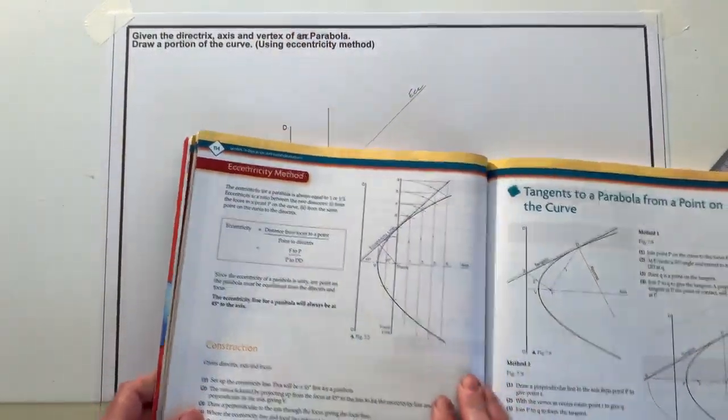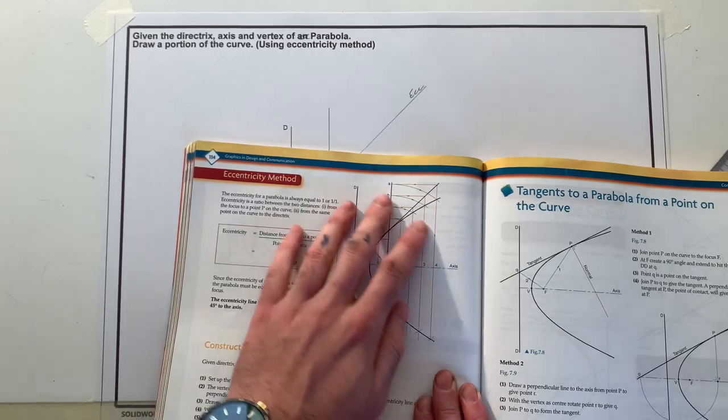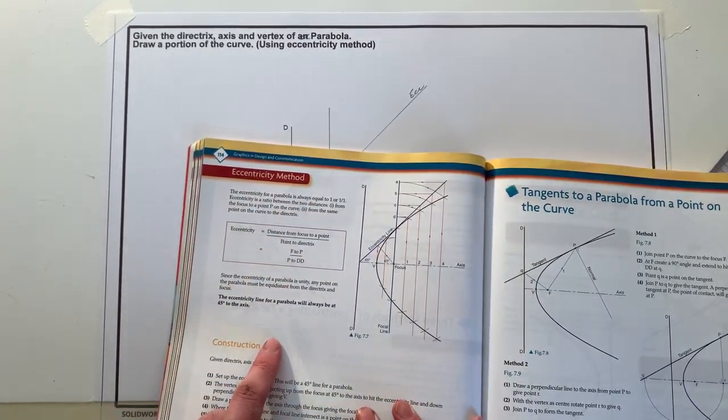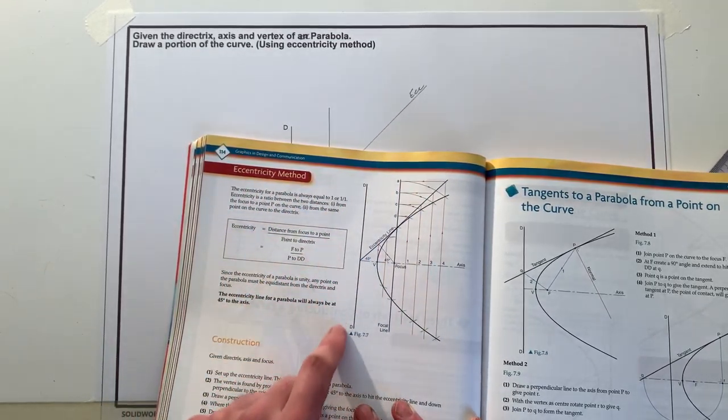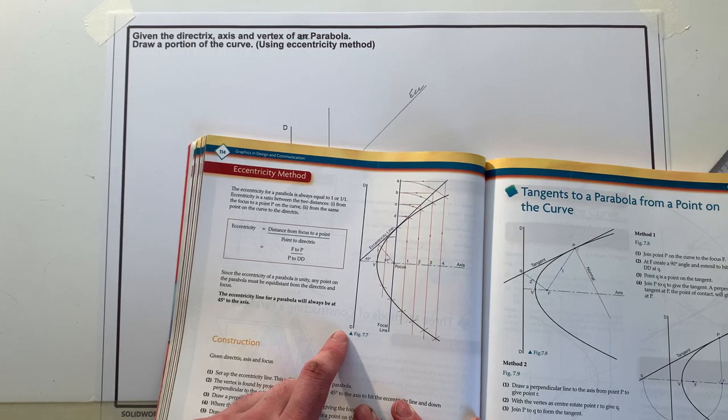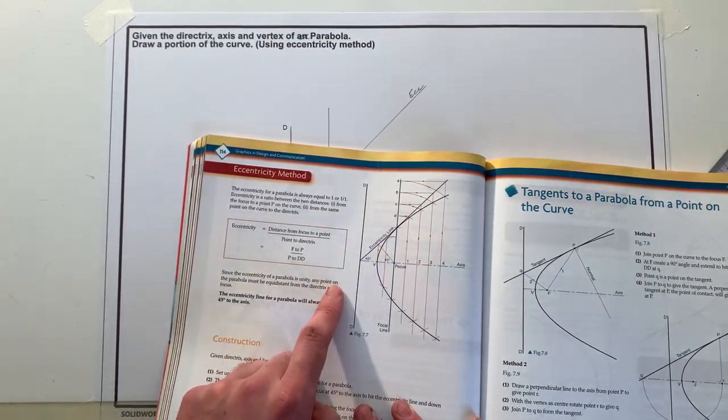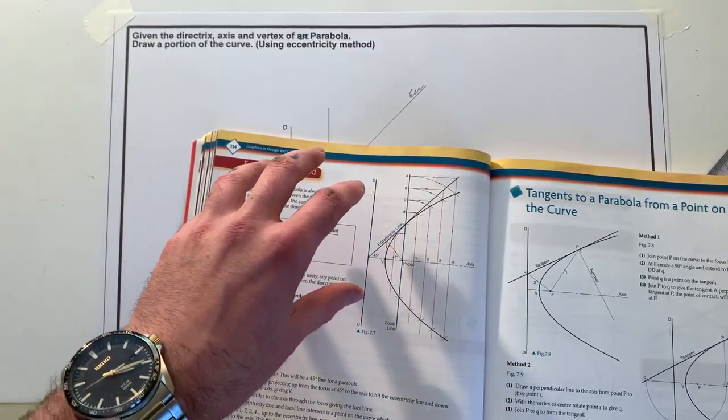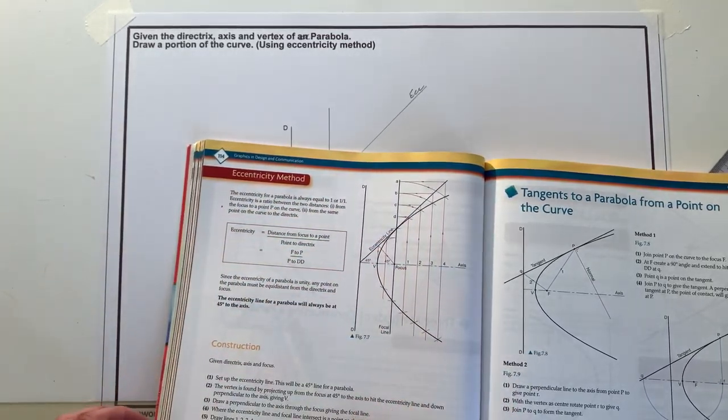You can see here this is going to be the method that we're using. If you want more information how the method works, refer back to the book here. Read through this carefully, look at what each individual line is talking about in relation to the drawing it's indicating. So if it talks about figure 7.7, come down to your figure 7.7. Sometimes it's on a separate page, just ensure that you're breaking down the information and relating back to the drawing that's given as well.